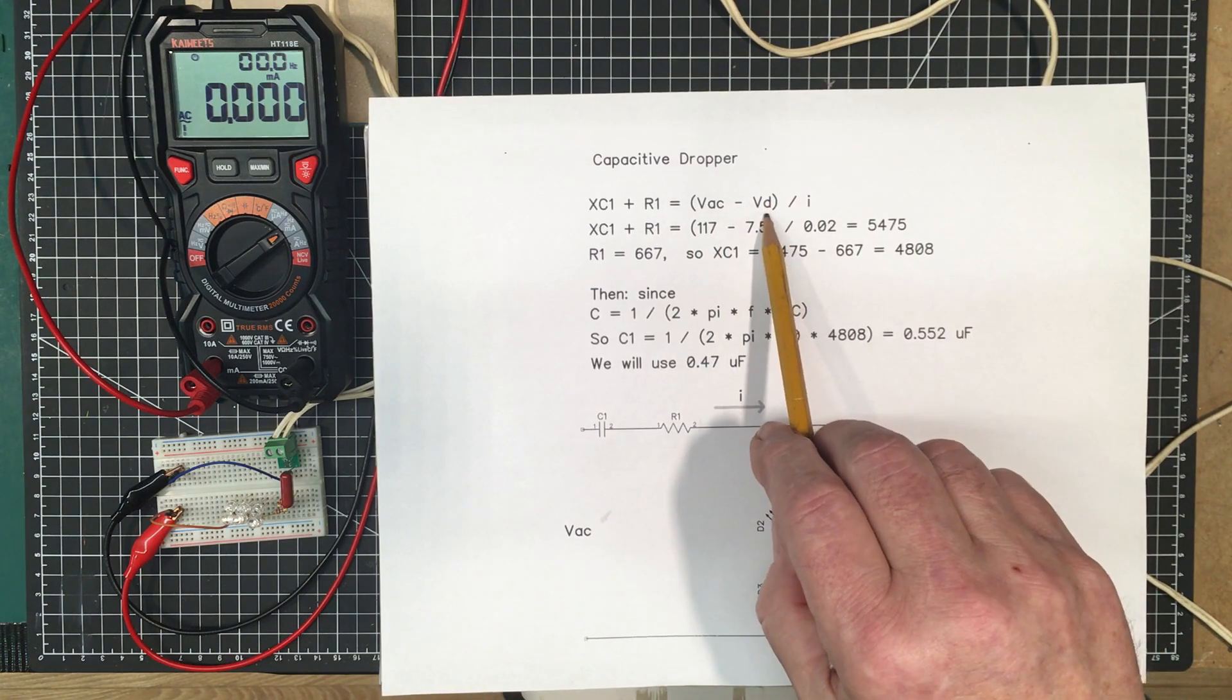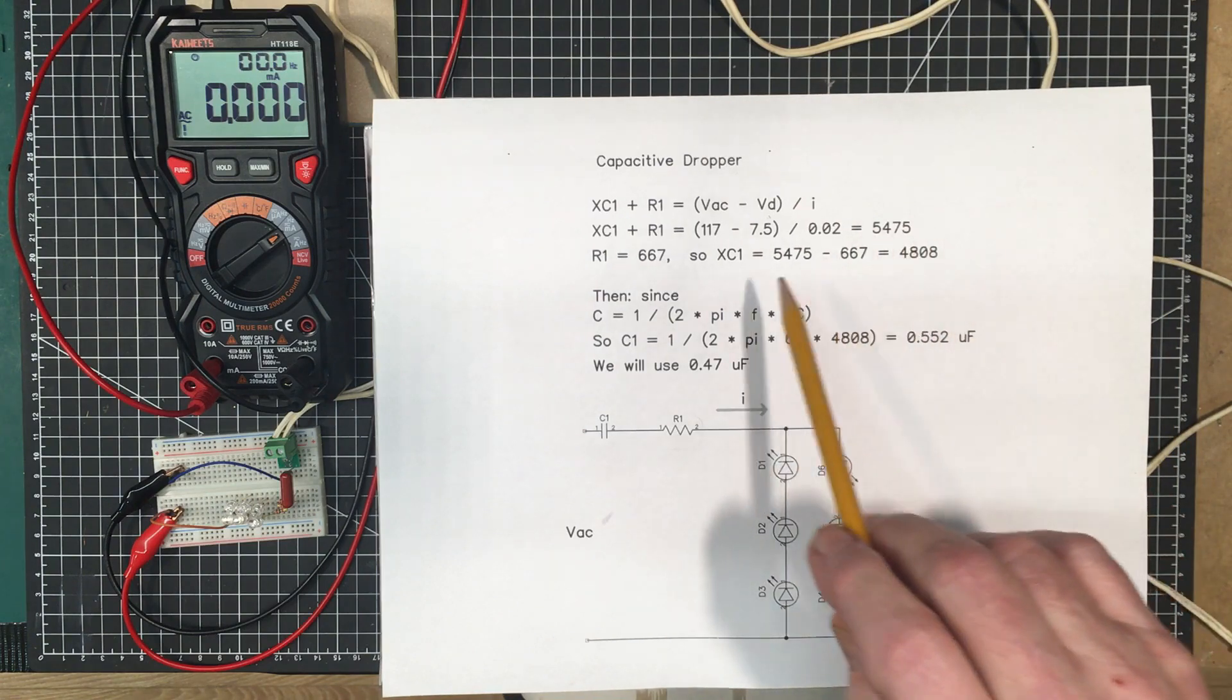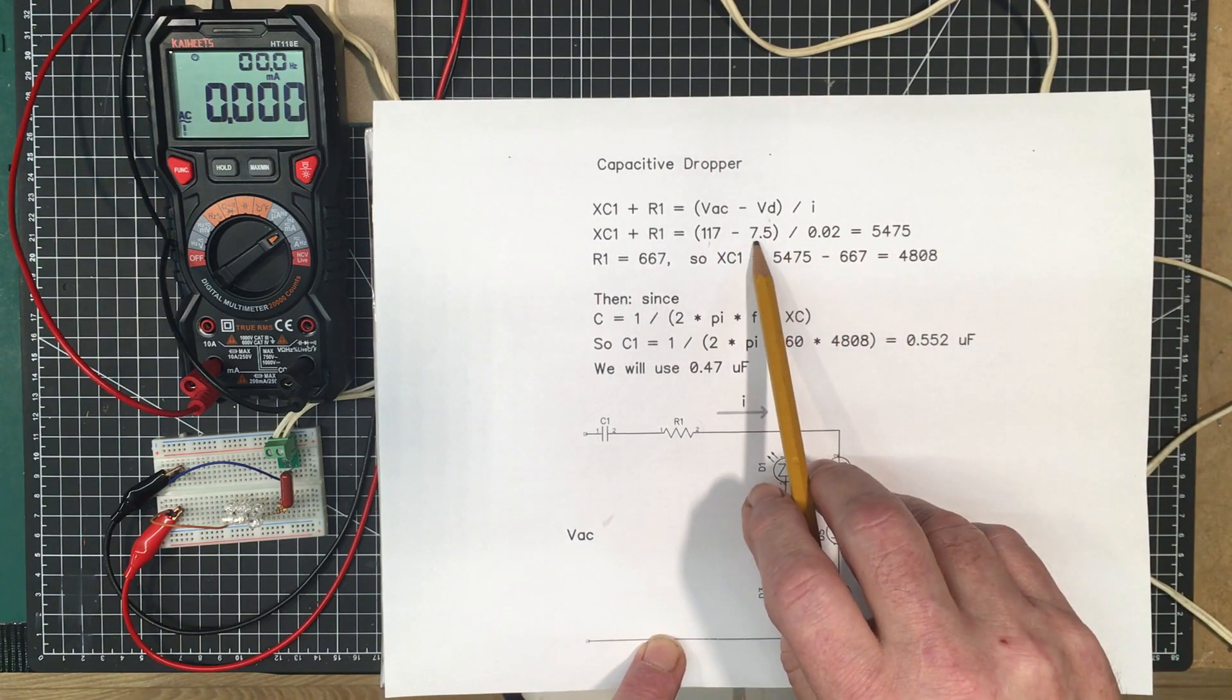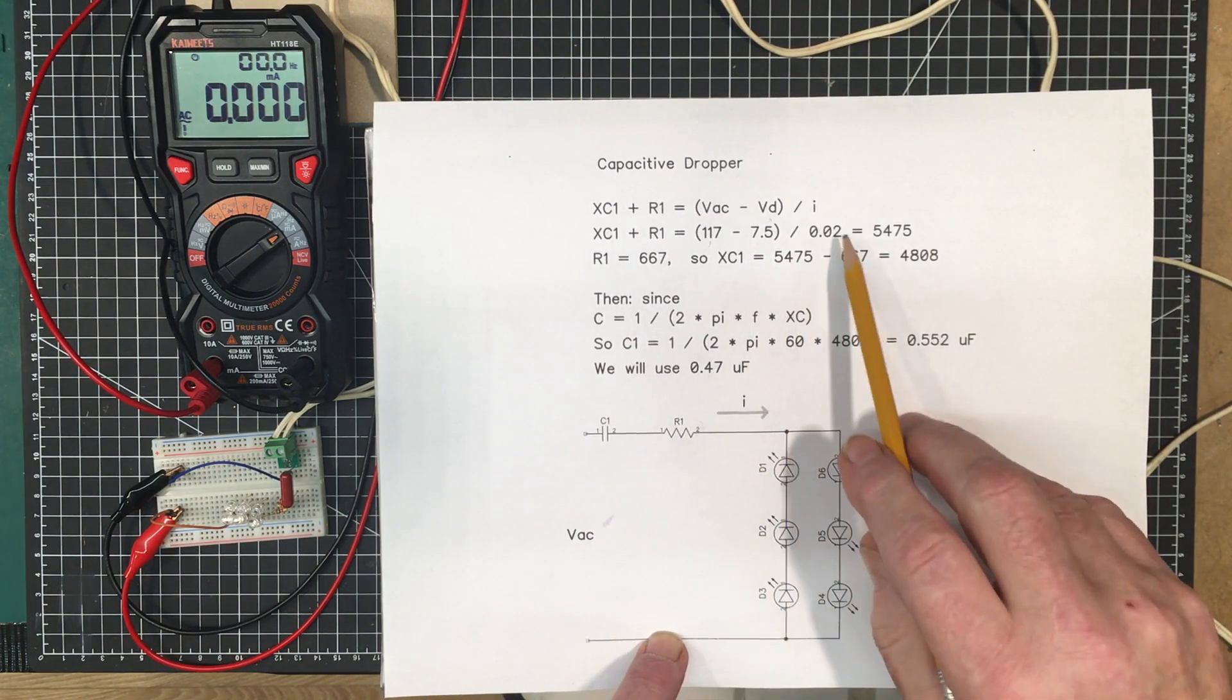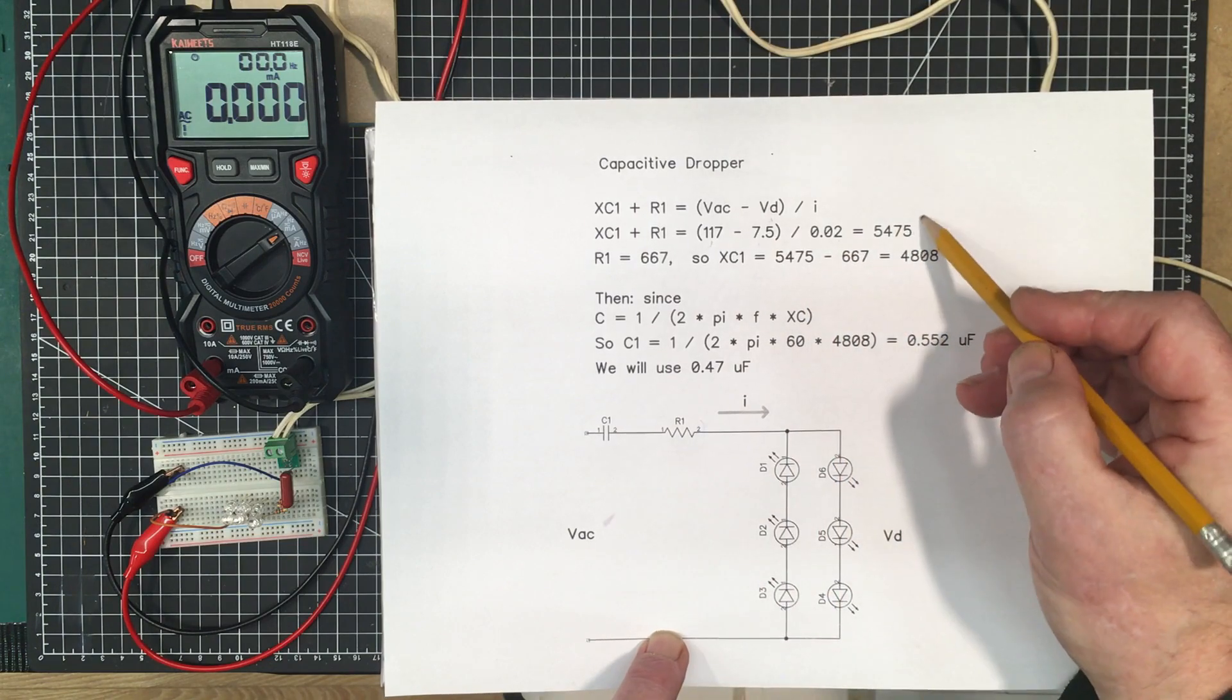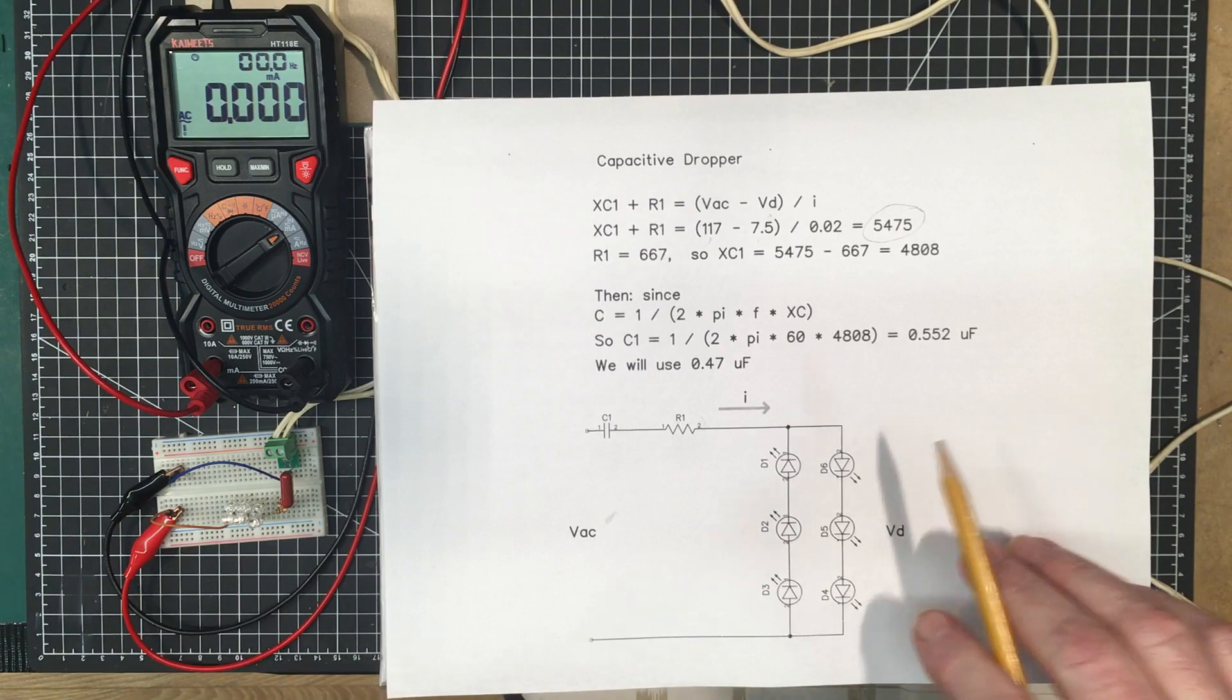The reactance of C1 plus R1 is going to equal the voltage going in minus the volts across the LEDs divided by the current. In our case, that's 117 volts AC, and I measured the voltage across the diodes at 7.5. We divide that by 0.02, which is the 20 milliamps, and we get 5,475 ohms of real and reactant impedance.